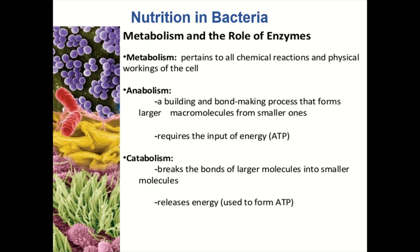Anabolism is actually a building and bond-making process that forms larger molecules from the smaller ones, and anabolism requires energy for making these larger molecules. Similarly, catabolism is a process that breaks the bonds of the larger molecules into the smaller molecules, and in catabolism energy is released in the form of ATP.